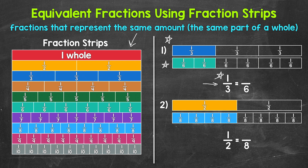For the fraction strip underneath, the whole rectangle has been divided into six equal parts. Each part is one-sixth of the whole. Now two of the parts are shaded in, so this fraction strip is showing two-sixths. Notice — and this is really important — each fraction strip is representing the same amount of the whole rectangle, the same part of that whole rectangle. Both have the same amount shaded in, even though we have different fractions. One-third and two-sixths are equivalent fractions, and the fraction strips help us see that.